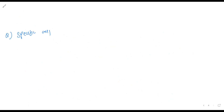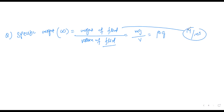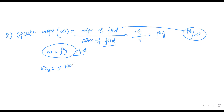The next important property is specific weight, indicated by omega (ω), and that is given as the weight of fluid divided by volume of fluid. Weight of fluid is mg, and m/V is rho (ρ), so specific weight equals ρ × g. The unit of specific weight is N/m³. For water, the density is 1000 and g is 9.81, so the specific weight is 9810 N/m³.